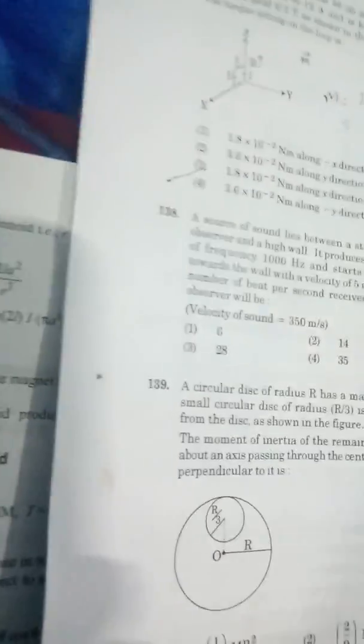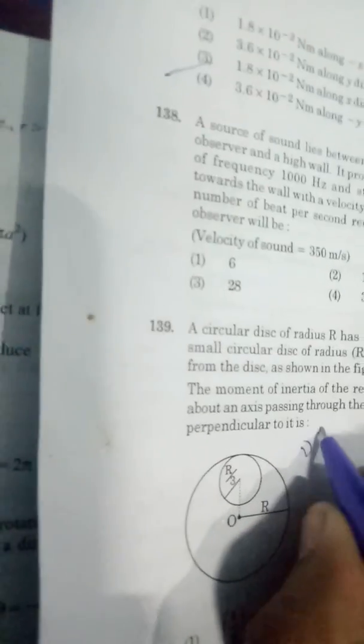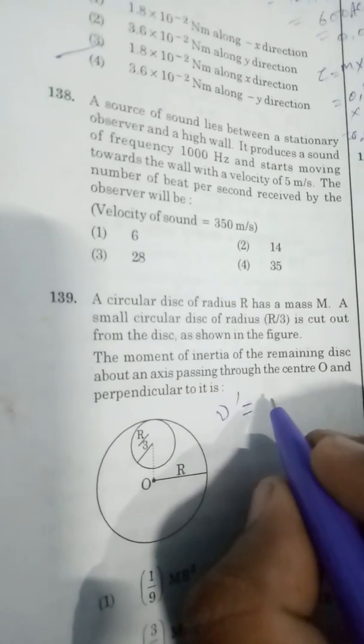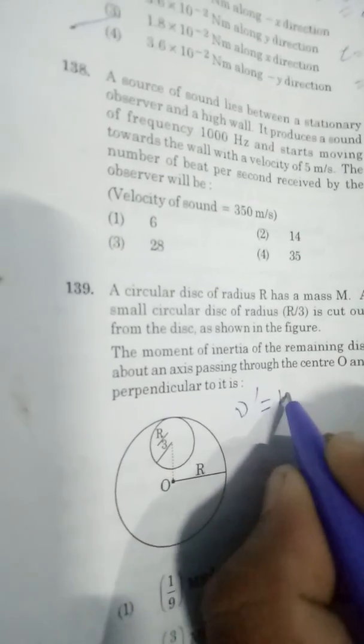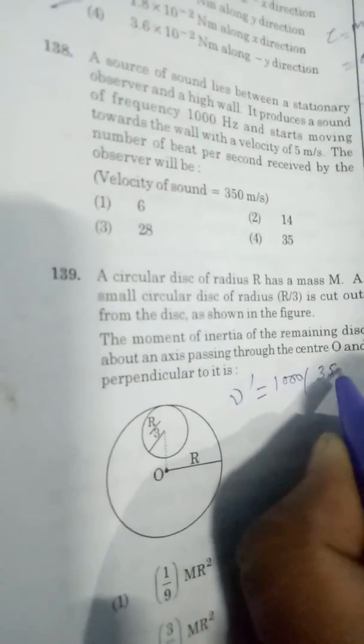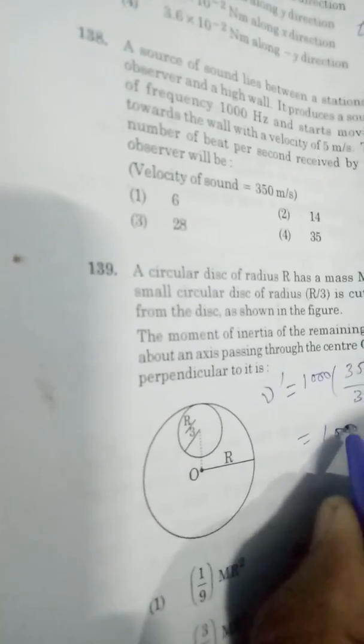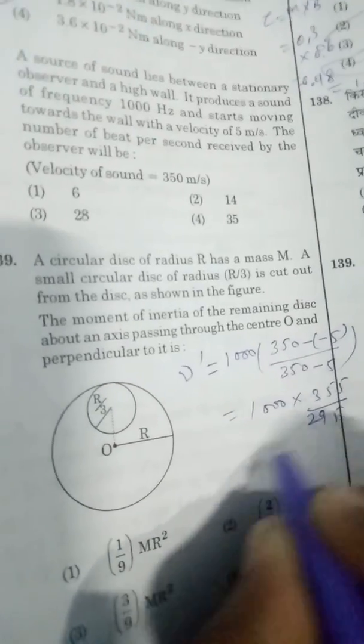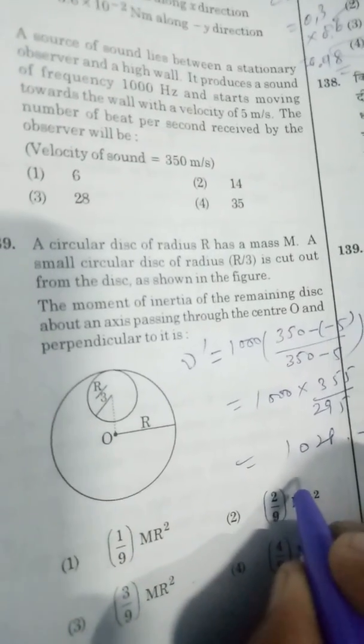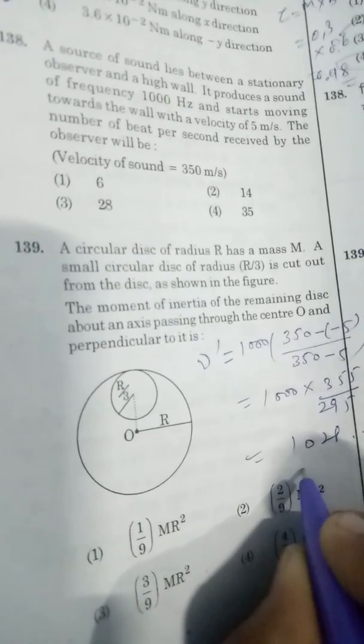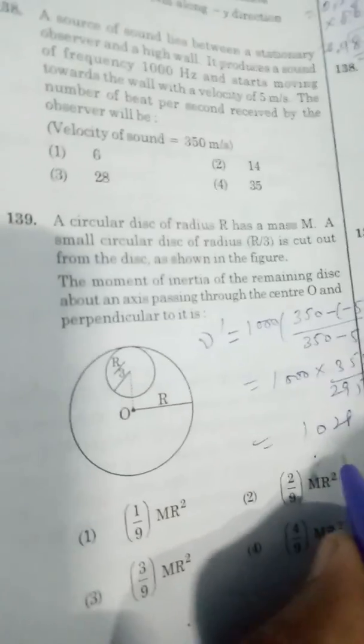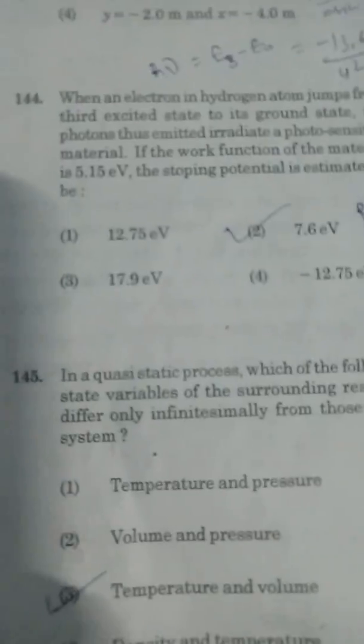In question 138, the frequency of the source: apparent frequency equals true frequency times (v + v_reflector) divided by (v - v_reflector). That's 1000 times 350/345 = 1000 times 355/295. On solving, that gives approximately 1028. So the frequency, the number of beats per second, is 1028 minus 1000, which is 28. Correct option is option number 3.